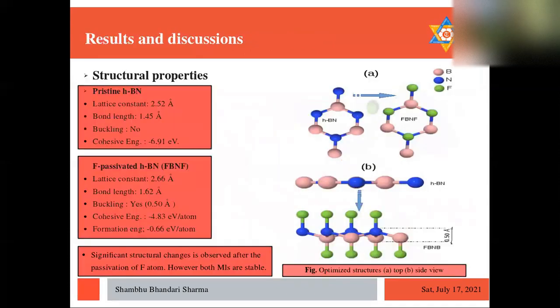So now let's start into the result and discussion part. First, the structural property. We can see the optimized structure of both pristine and fluorinated structure on the right. The important thing to mention here is the planar structure is turned into the buckled structure after fluorination with the buckling height around 0.50 angstrom. And we can see there the bond length is increased significantly between boron and nitrogen. And the negative cohesive and formation energy value confirm the monolayer is stable as well as the fluorination is experimentally feasible.